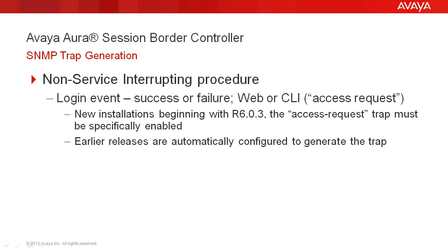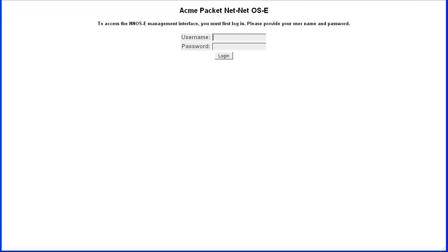We will provoke a non-service interrupting event by simply logging into the SBC web interface. Both successes and failures are notified. This is dependent on the Access Request Trap being configured, which belongs to the System Trap Filter category. The System Filter is enabled in all releases. However, in Release 6.0.3, the Access Request Trap must be specifically enabled.